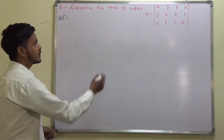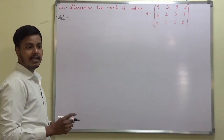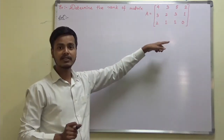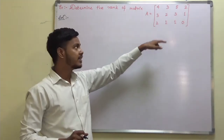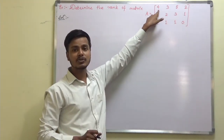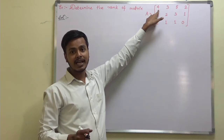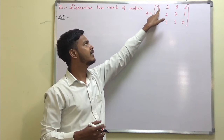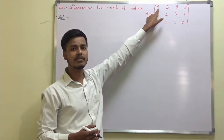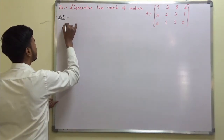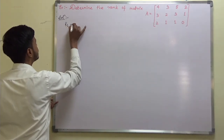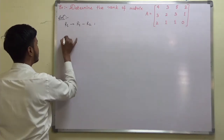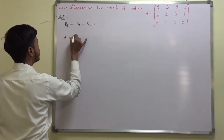Let us see the problem on rank of a rectangular matrix. The given matrix is this one. A remark I would like to make: whenever you have to find out the rank of a matrix, make the first element of the matrix to be 1 so that the calculations become very easy. This can be done by r1 changes to r1 minus r2.